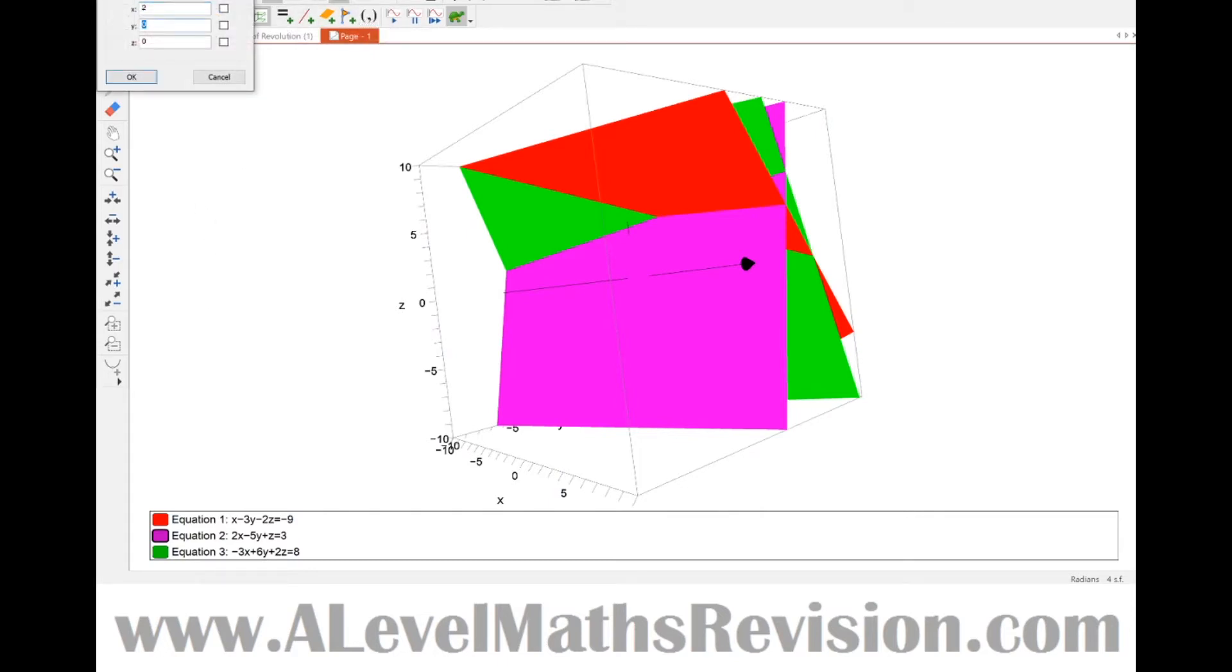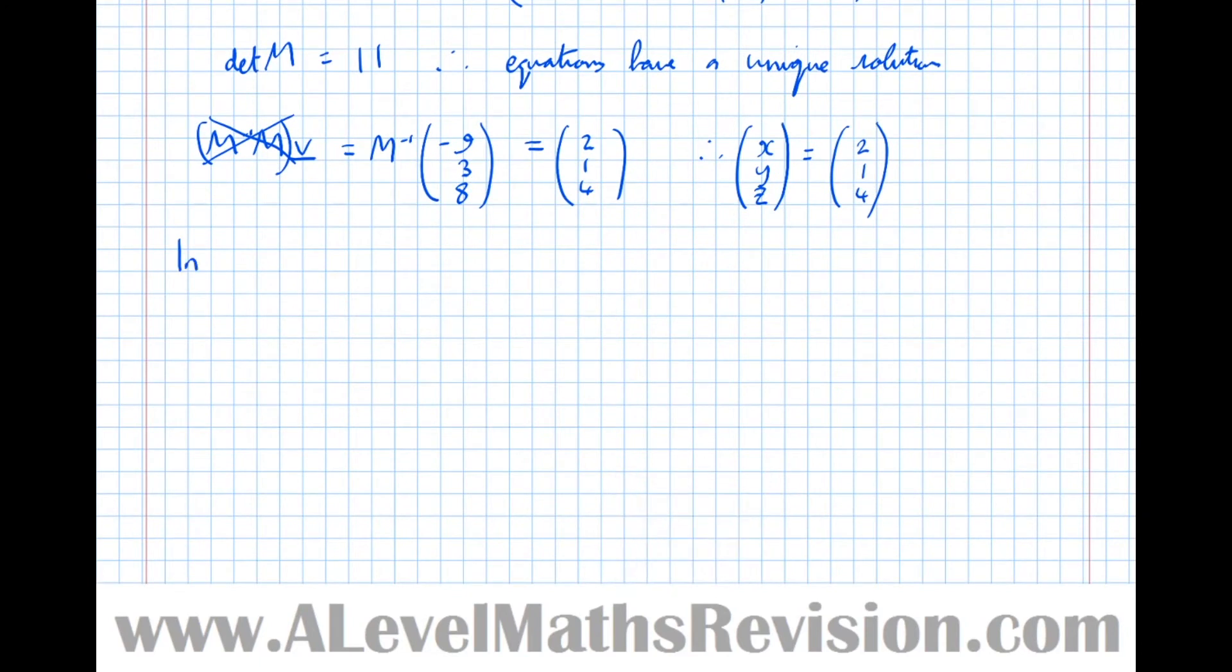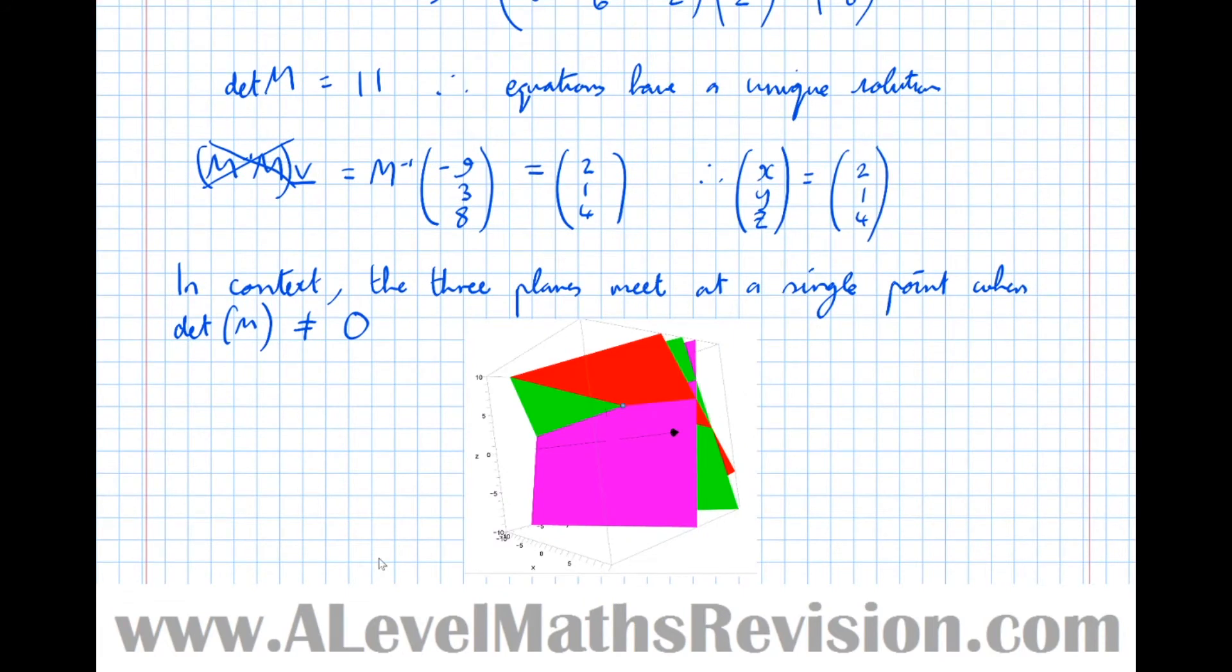So 2, 1, 4. Indeed it is. All three planes meet at a single point, 2, 1, 4. So the equations are consistent, meaning all the planes meet at a single point. So let's summarize. So in context, the three planes meet at a single point, in this case here, where the determinant is non-zero. So when the determinant of M is not equal to zero, and there's a diagram of that happening there.